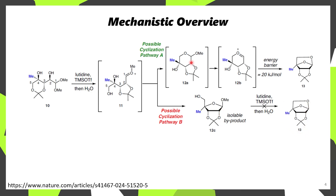However, once you have the primary alcohol pyranose derivative, this is then able to react with another equivalent of the Lewis acid, which then forms another oxonium. This oxonium can then be attacked by the tertiary alcohol, forming product 13, which is the magic building block for this whole strategy.